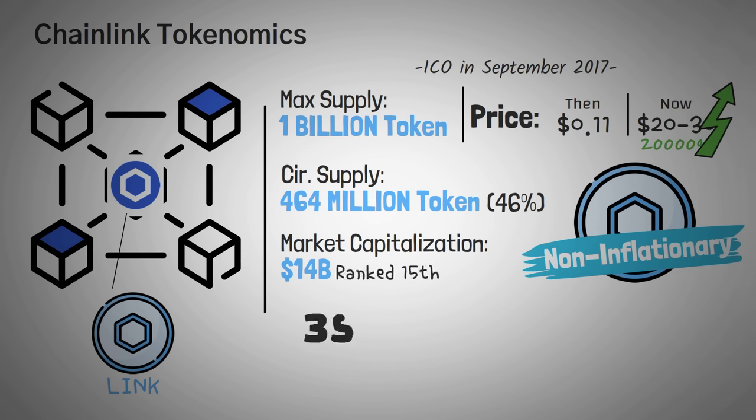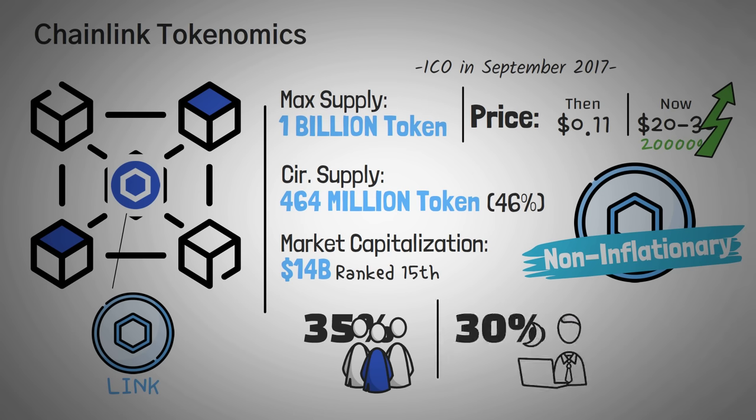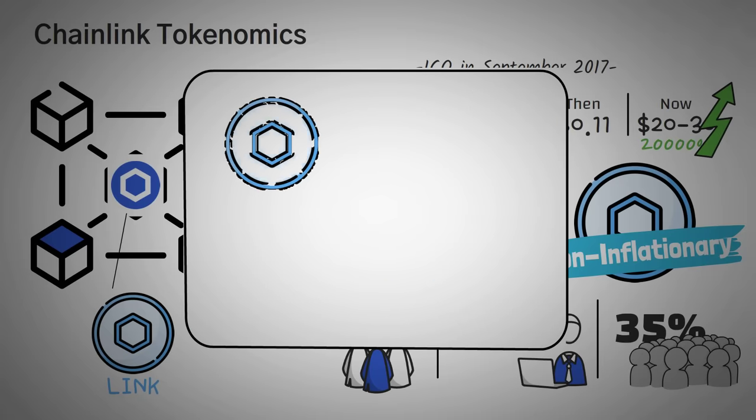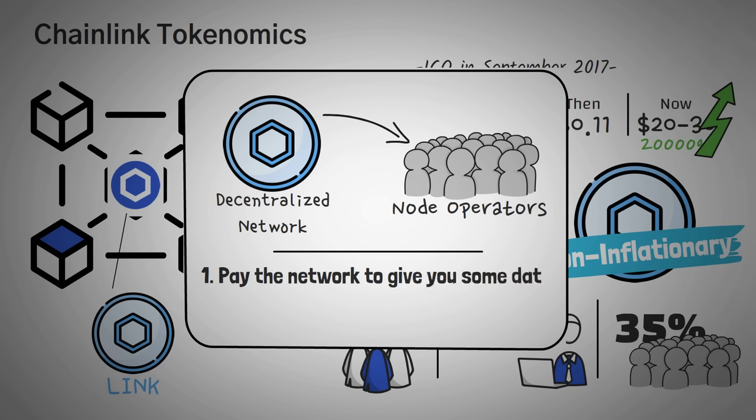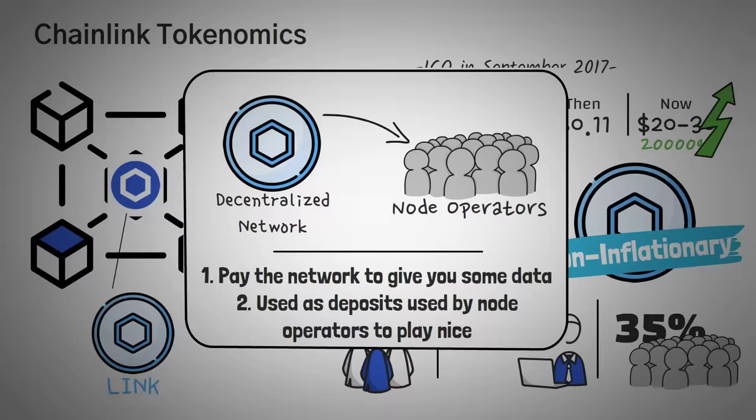Chainlink's whitepaper reveals that 35% of LINK's total supply will be allocated to people who help secure Chainlink's network and actually run the oracles. Then another 30% will be channeled towards the development of the Chainlink blockchain and the ecosystem, and the remaining 35% were sold in public sales events like the ICO. Since Chainlink is a decentralized network, users can leverage it to become node operators themselves and earn LINK tokens by handling important data-related tasks that ultimately lead to the blockchain's success. Now in short, and this is important, the two main uses of LINK tokens are to pay the network, including the oracles, to give you some data, and also to be used as deposit by node operators to ensure that they play nice and stay honest.